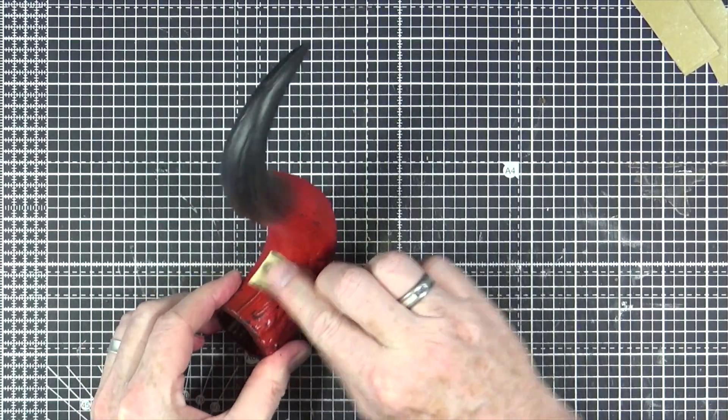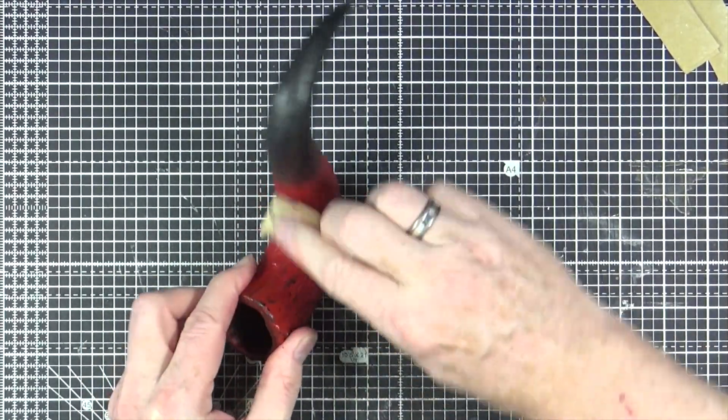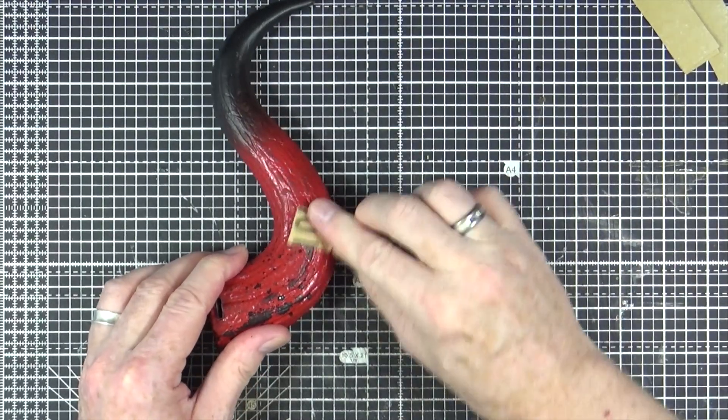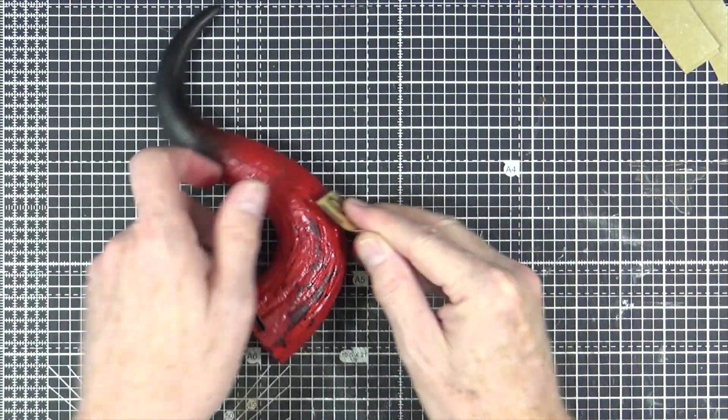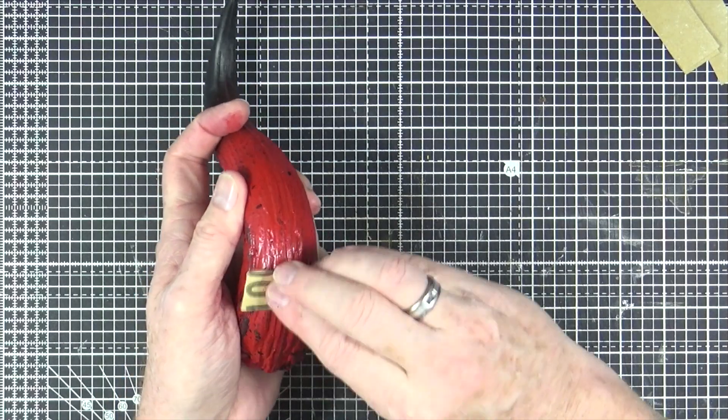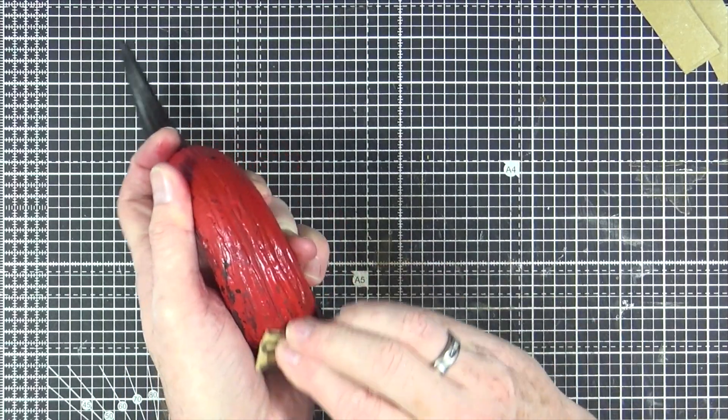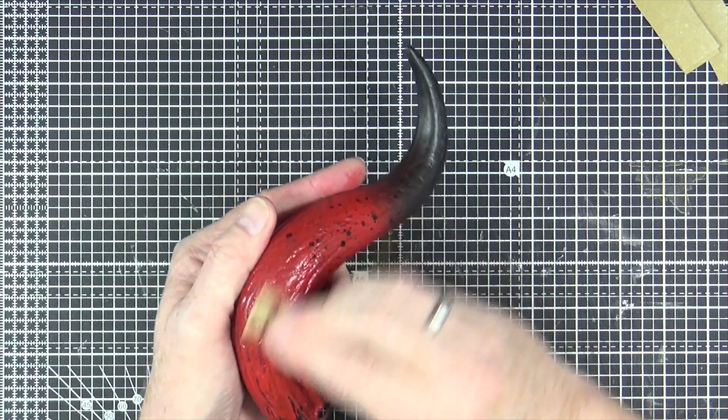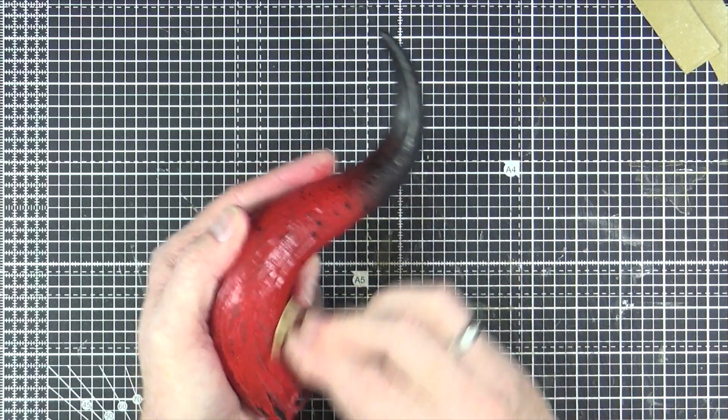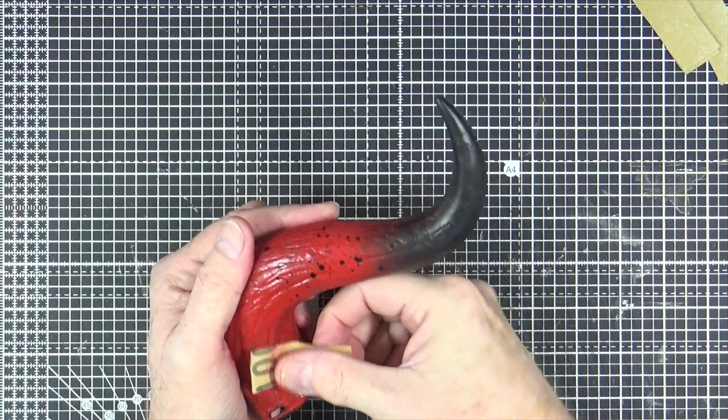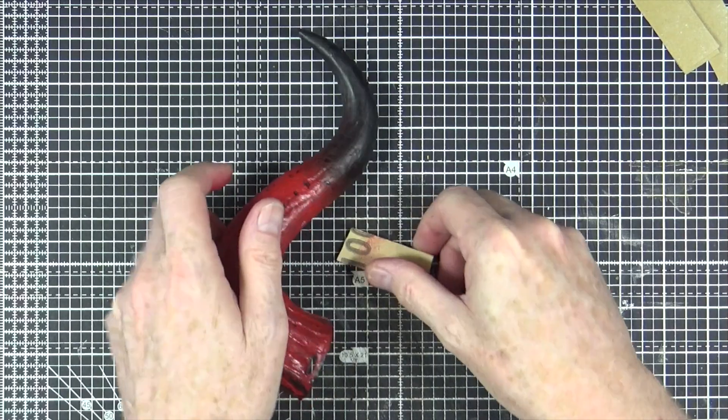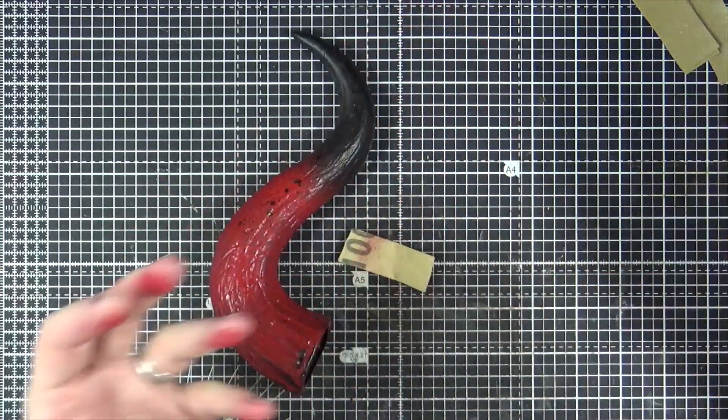I'm just going to whip around really quickly, just kind of create a bit of texture for my next layer of paint. And you can see it's coming off because it's coming off all over my hands.